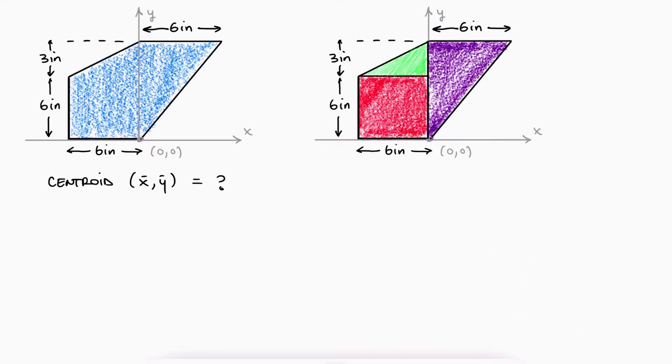The centroid in the x direction will be equal to the x centroid of each shape times each area added together, since we're adding those three shapes over the total area. The same is true for y bar with the centroids in the y direction.